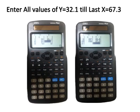Enter the first observation of Y, which is 32.1, then write all remaining 19 observations one by one. The last Y observation is 67.3. An important tip: check that the first observation of Y (32.1) is in the same row as the first X (52). If you enter a wrong value and want to remove it, press the DEL button.